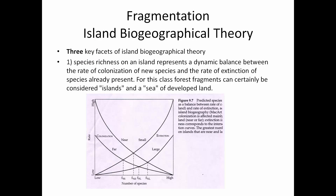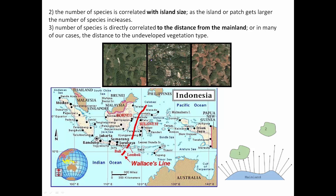We'll just review this real quick. There are three key facets. First, species richness — the number of species. If your bird species richness is 15, there are 15 species of birds. You usually don't lump birds, mammals, reptiles, and insects together but look at each group. Island size determines the balance between colonization and extinction. The larger the island, the more species there will be.